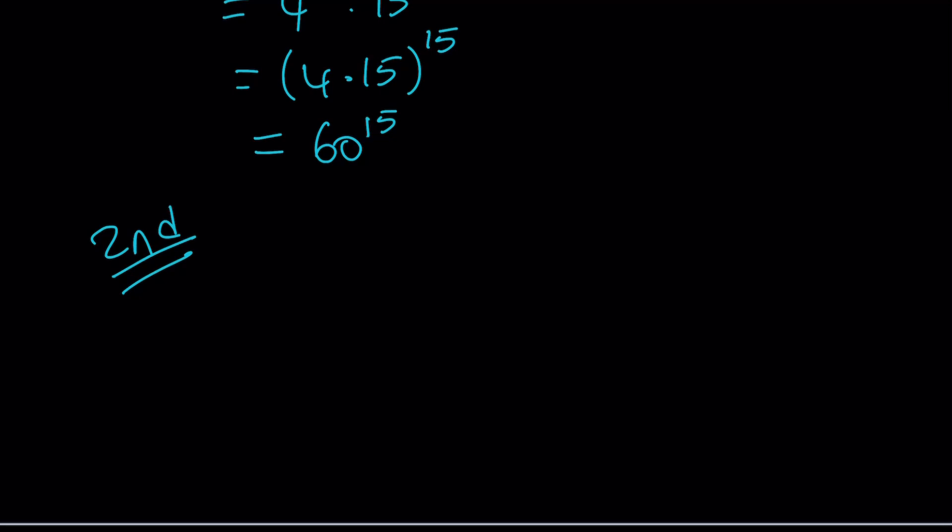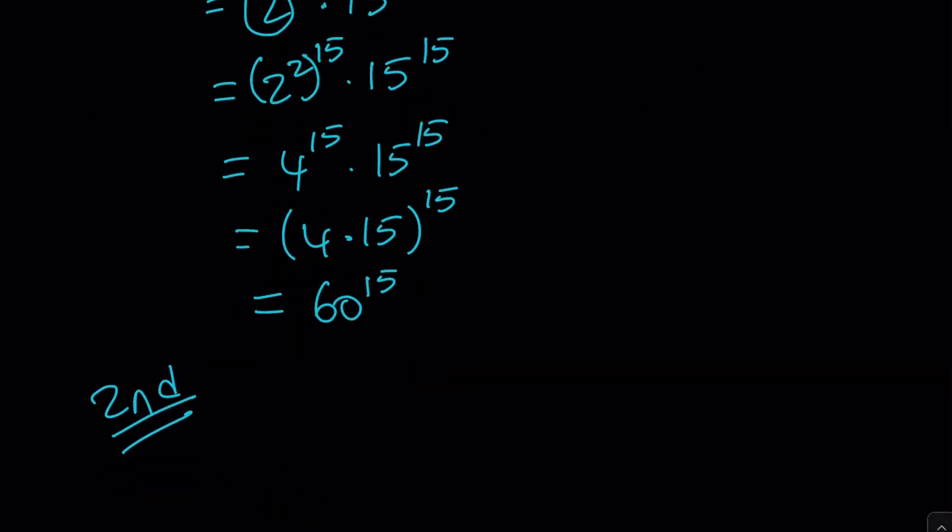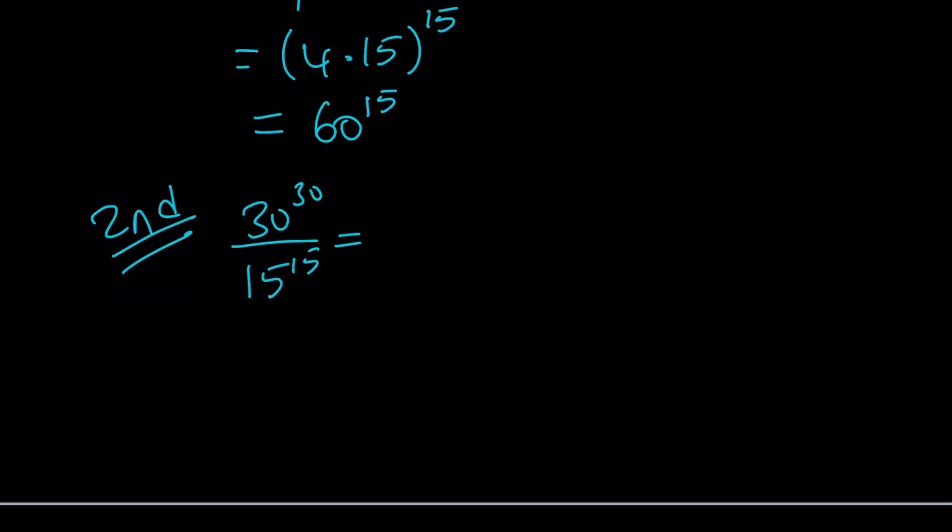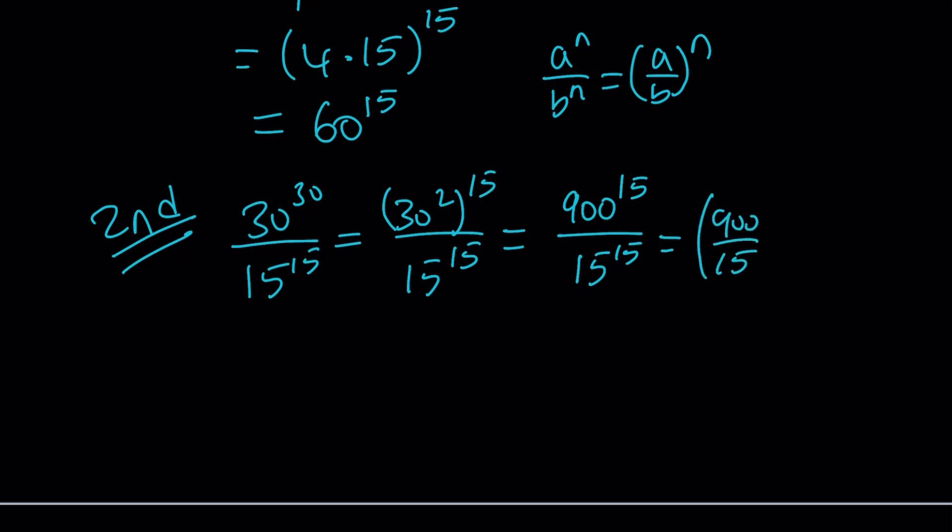So the second method is going to use the following. We have 30 to the power 30 divided by 15 to the power 15. So here's what I'm going to do. I'm going to work with the 30 and 15 directly. So why don't we just write this as 30 squared to the power 15 divided by 15 to the power 15. Now 30 squared is 30 times 30 which is 900. So this becomes 900 to the 15th power divided by 15 to the 15th power. The same property that we have for multiplication also applies to division. So anytime you have a to the n divided by b to the n, this can be written as a over b to the n.